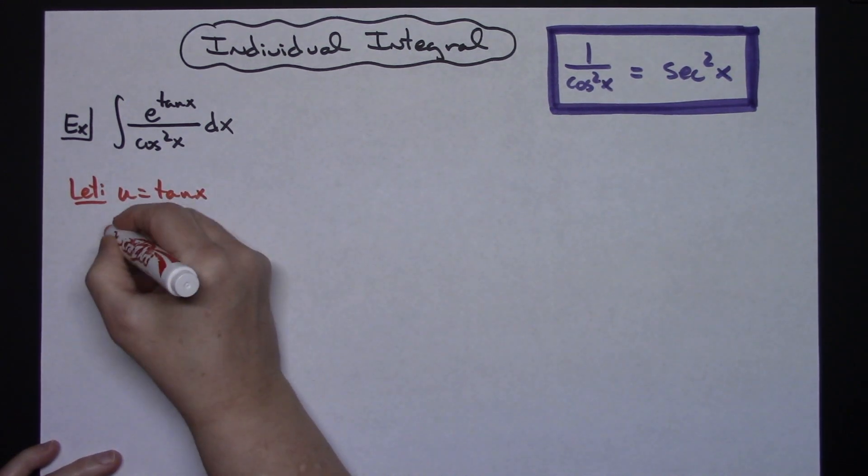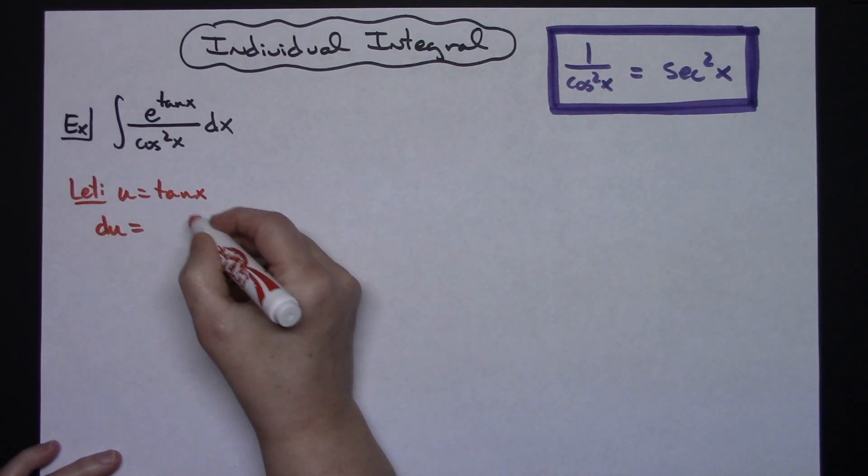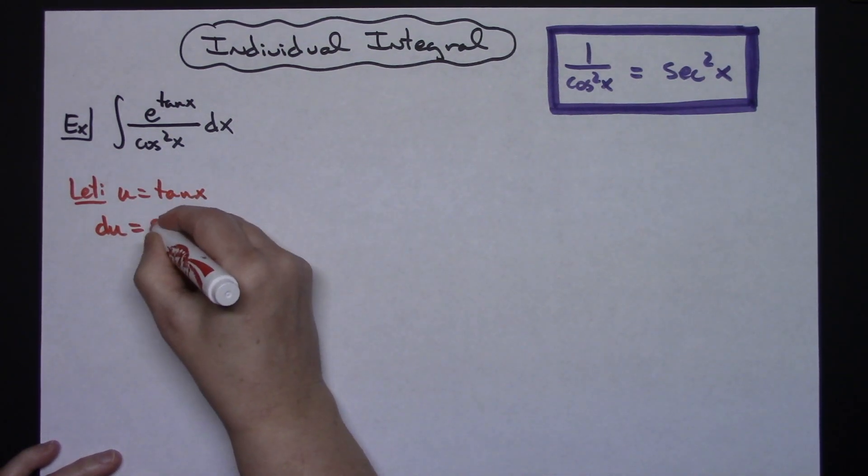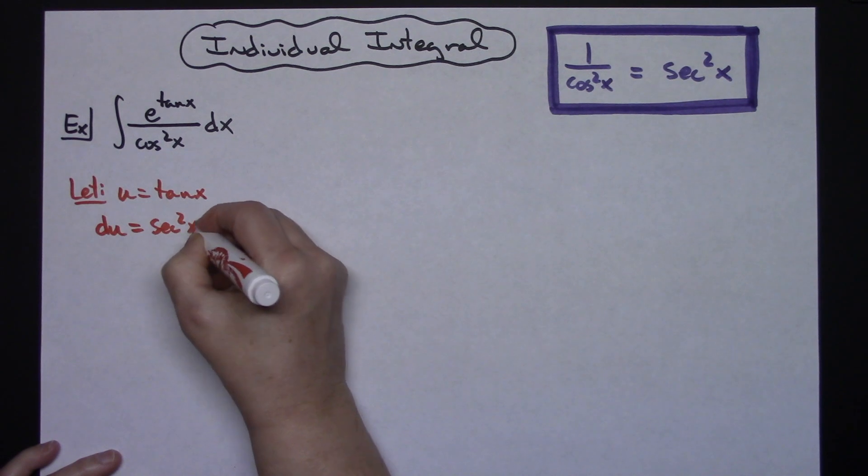I'm going to take the derivative of both sides. I'll have du equals, remember your derivatives there, secant squared x dx.